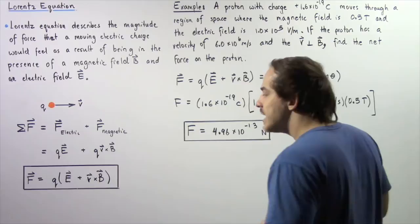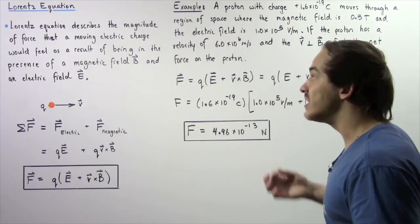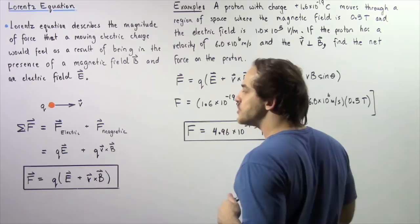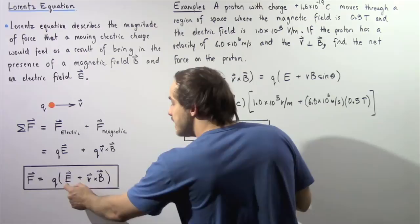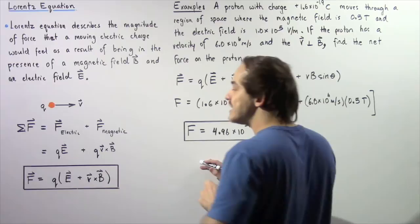So the net force acting on our electric charge that is moving through an electric field E and a magnetic field B is given by the following equation. We take the product of the charge Q and the sum of E plus the cross-product of V and B. This equation is commonly known as the Lorentz equation.